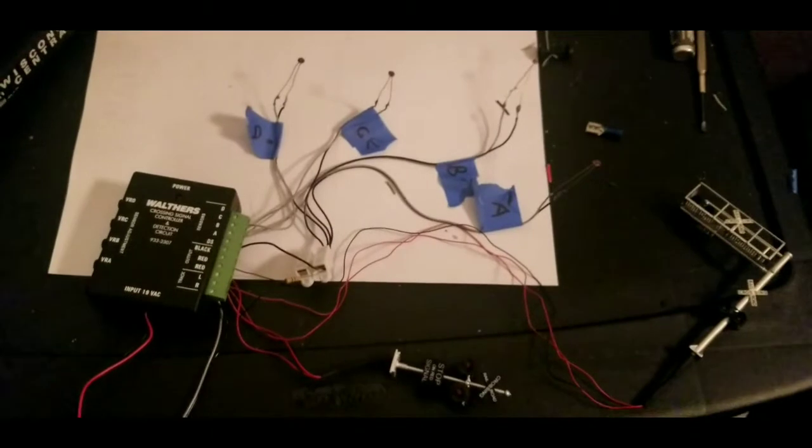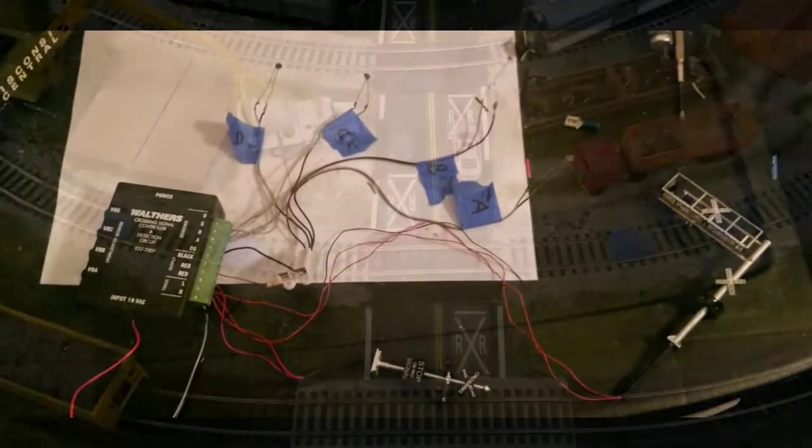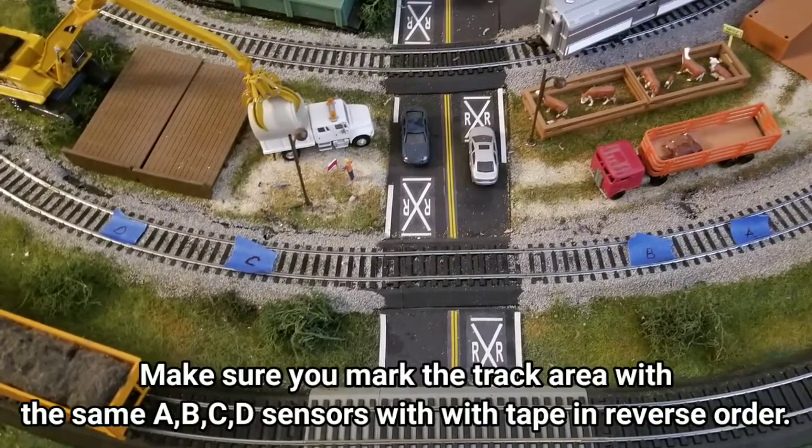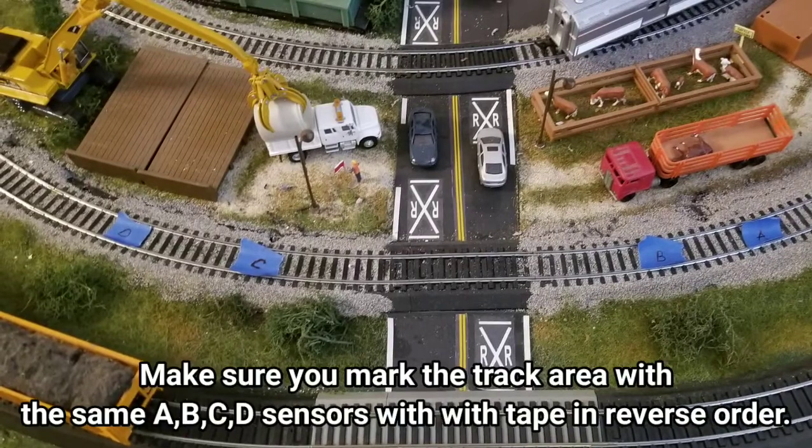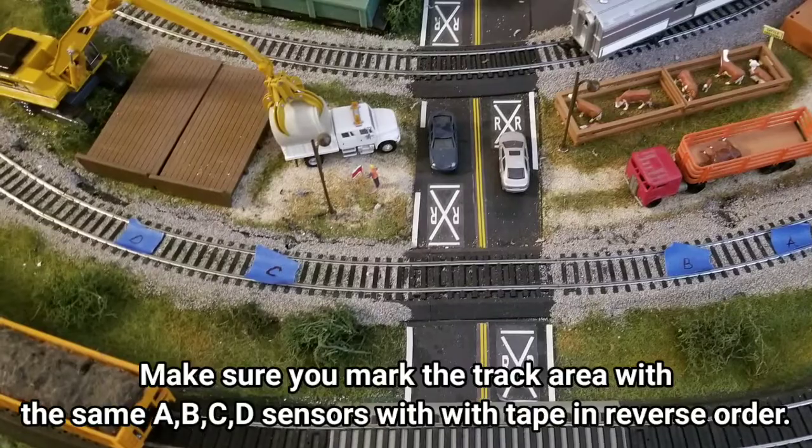And I just wanted to document. So now we're going to have to wire this puppy into the layout and we're going to have lots of fun, right? Yeah. Let's go. Make sure you mark the track area with the same A, B, C, D sensors with tape in reverse order.